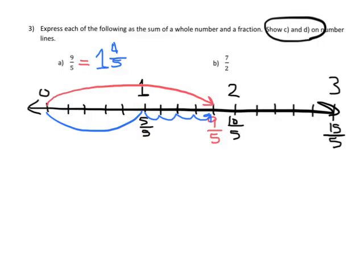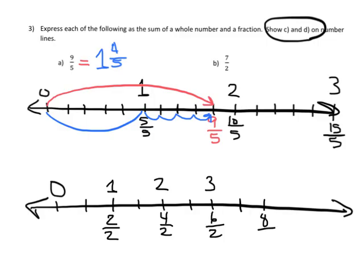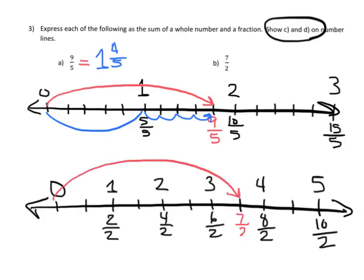Now let's do 7 halves. We start at 0, and because the denominator is 2, every 2 intervals equals 1 whole. So 2 halves equals 1, 4 halves equals 2, 6 halves equals 3, 8 halves equals 4, and 10 halves equals 5. We're supposed to go to 7 halves, which lands right here — that's equal to 3 wholes plus 1 little half, so 3 and 1/2.